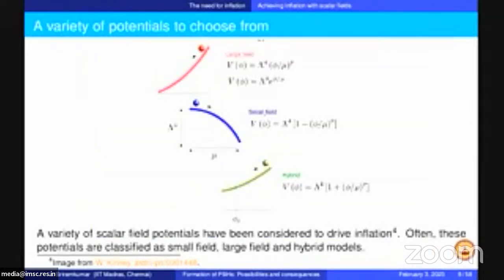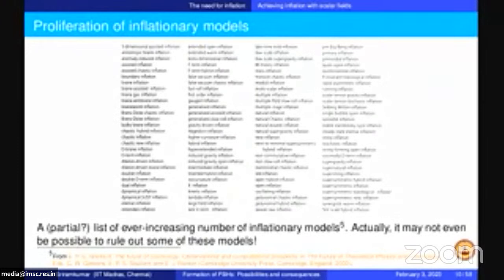There are many, many models of inflation — a list was produced almost 20 years back and many models continue to be added. There has been a systematic effort by Jerome Martin and collaborators to constrain inflationary models. Nevertheless, many models remain consistent with the data; some may not be possible to rule out. This is where small scale observations come in handy, as I will describe.